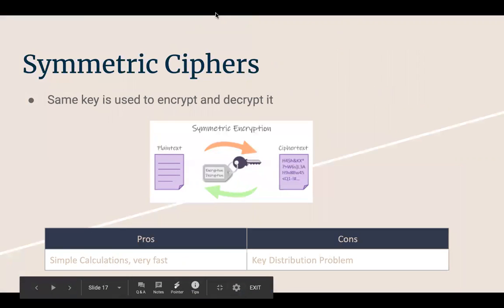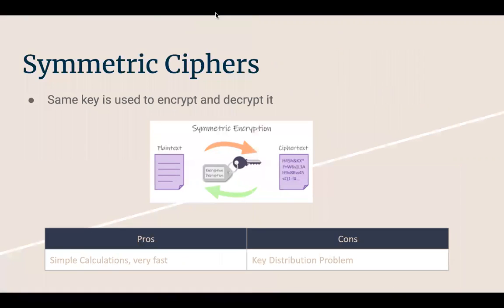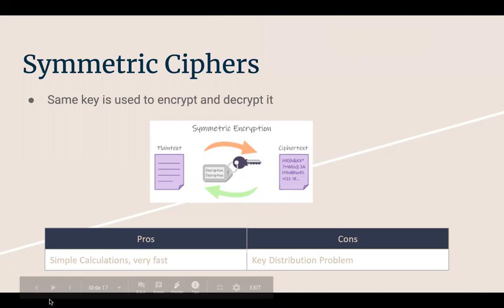The Caesar cipher is a symmetric cipher. Symmetric encryption is very fast, but the problem is the key distribution issue: since it uses a symmetric key, you have to get that key through a secure channel — either write it down and give it to the person before communicating, or find some other way to share it.